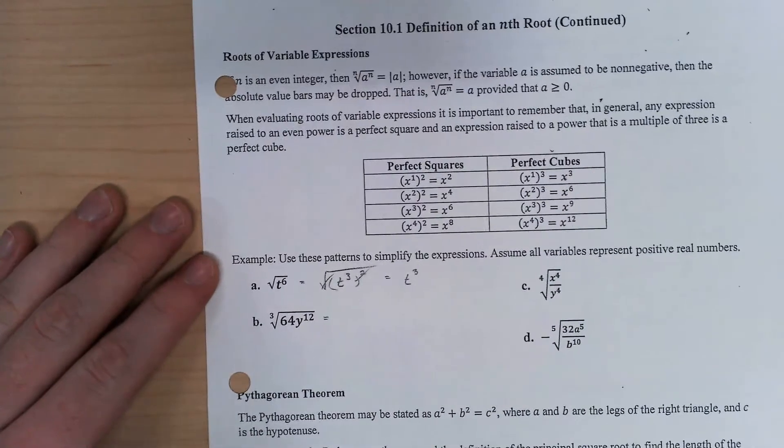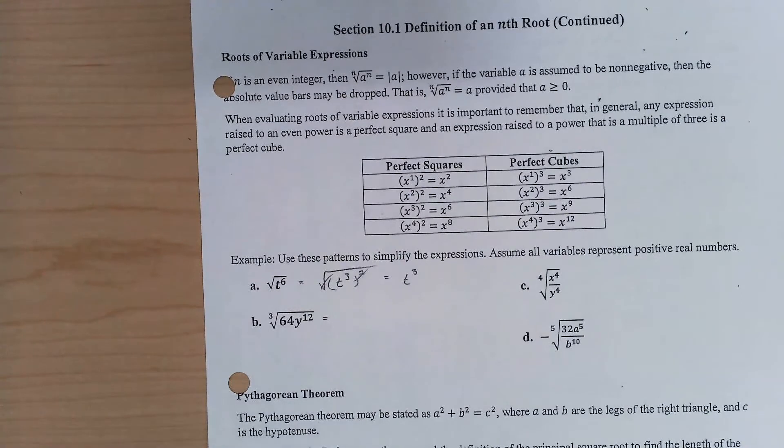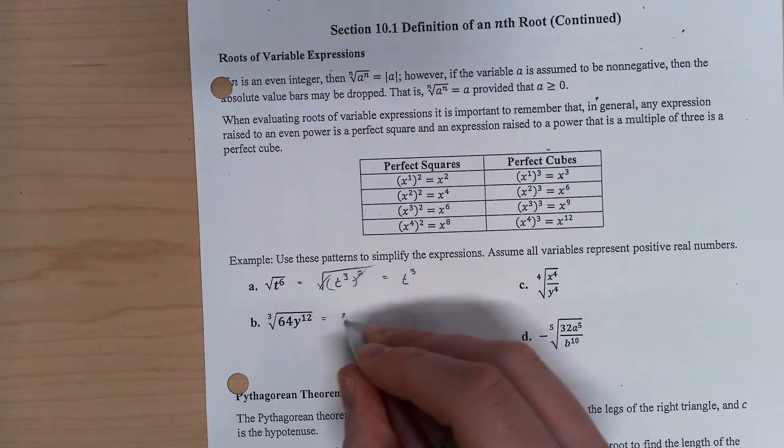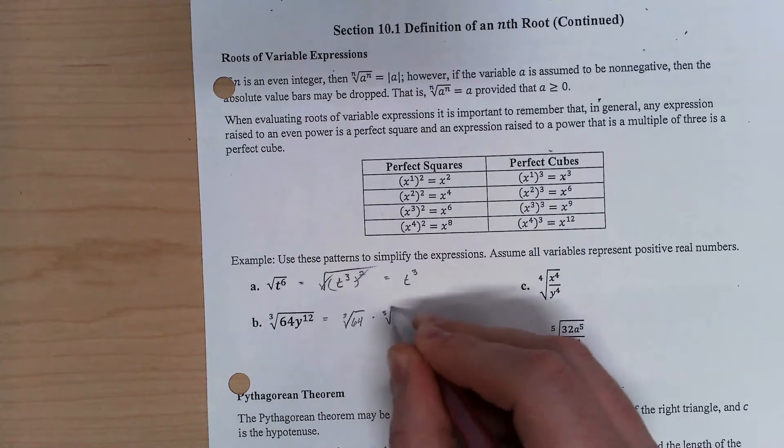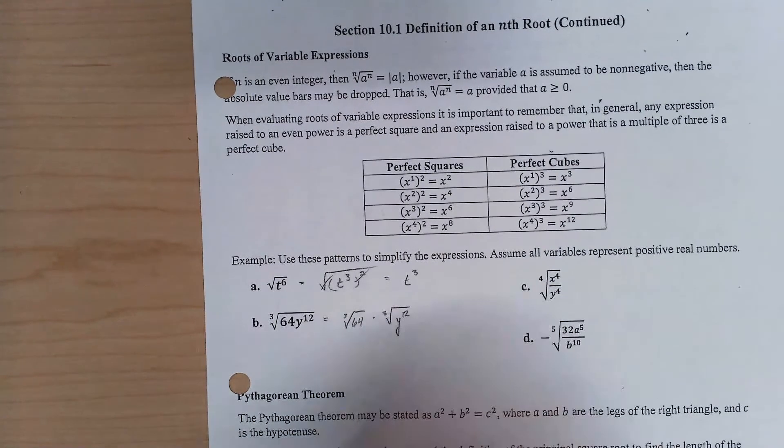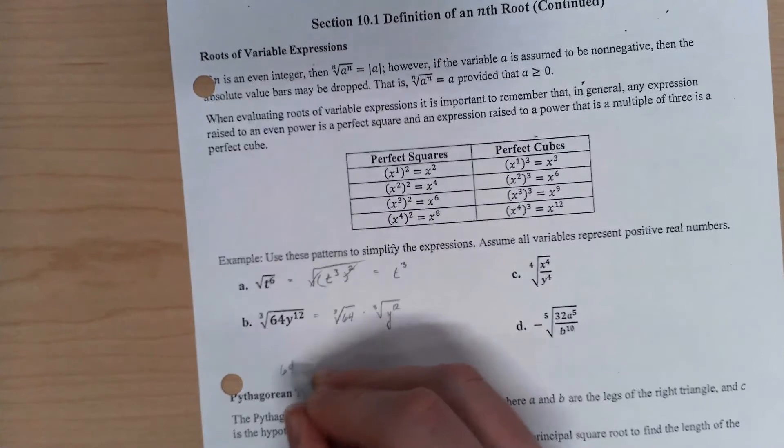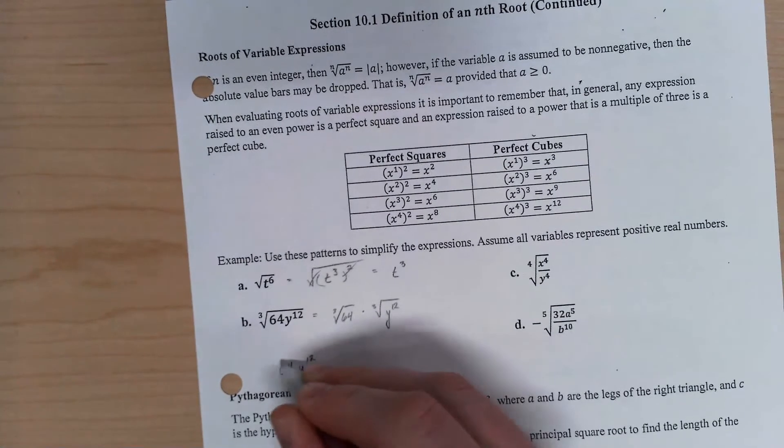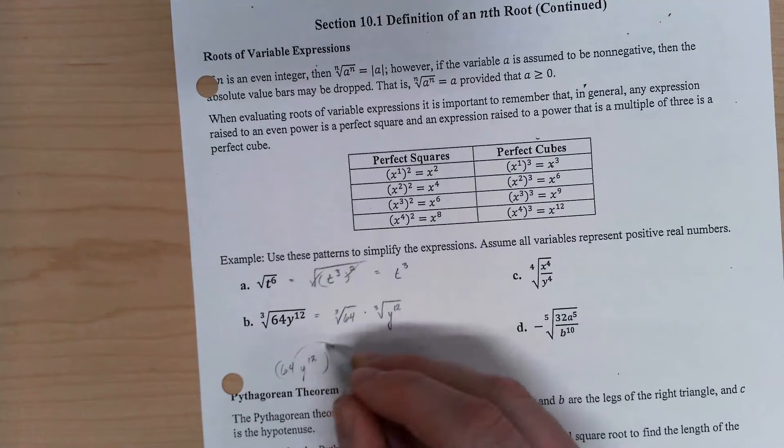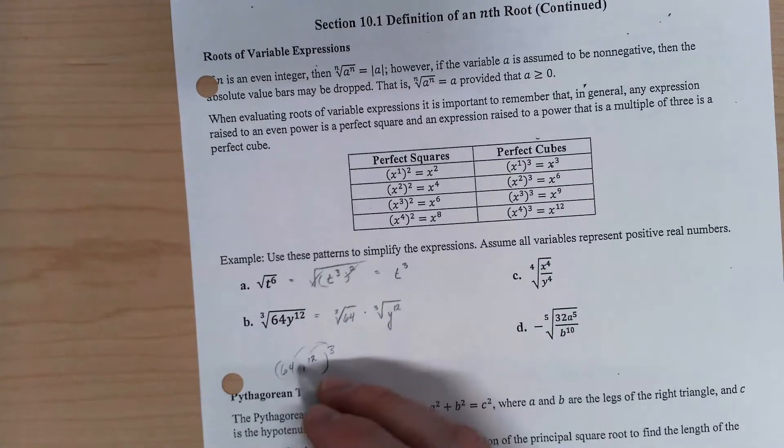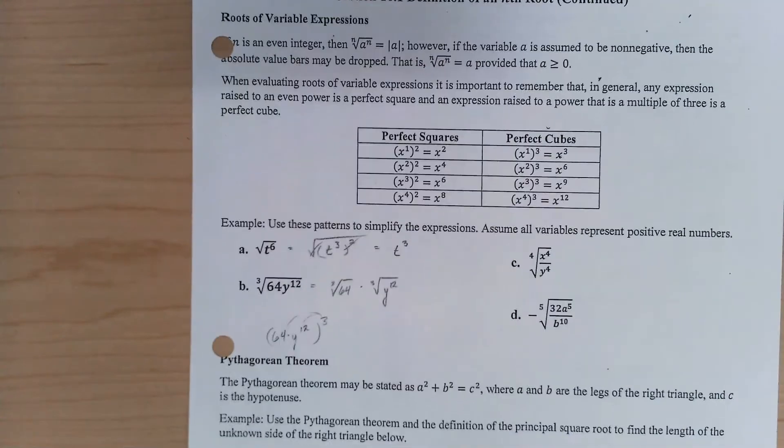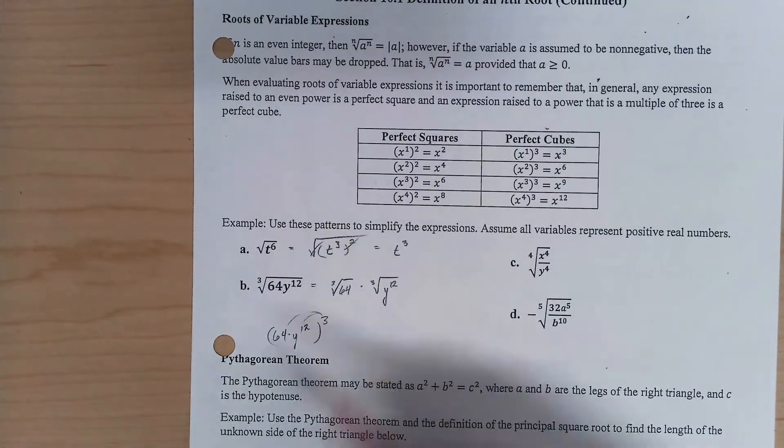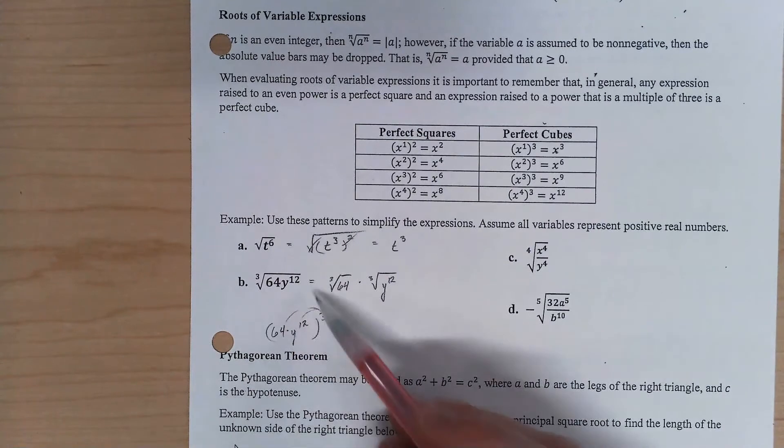So extending how my exponent rules affect my square roots just the same, I can say the cube root of 64 times the cube root of y to the 12th. Just like if this were to the third power, and I could distribute it to the terms because it's multiplication. Remember, it has to be multiplication. We can't have addition or subtraction. I can distribute the square root, or the cube root, just the same.